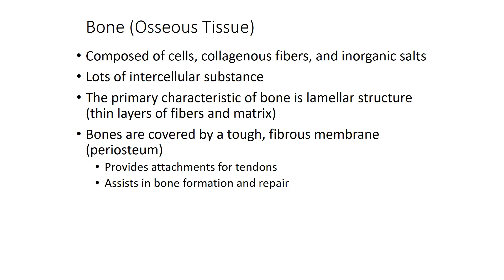Bone or osseous tissue is composed of cells, collagen fibers, as well as a lot of inorganic salts. Primarily bone consists of intercellular substance. These intercellular substances are organized in layers in a way referred to as a lamellar structure — layers of collagen fibers and intercellular substance organized rather than random. That's why, for example, when bones break you can get little shards out of them, because the bone is organized in a particular direction.